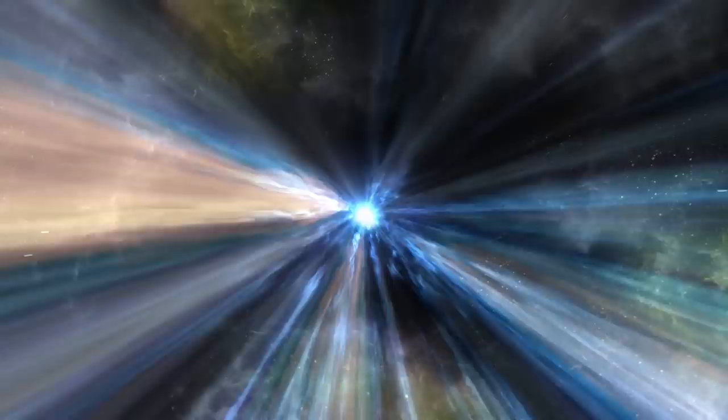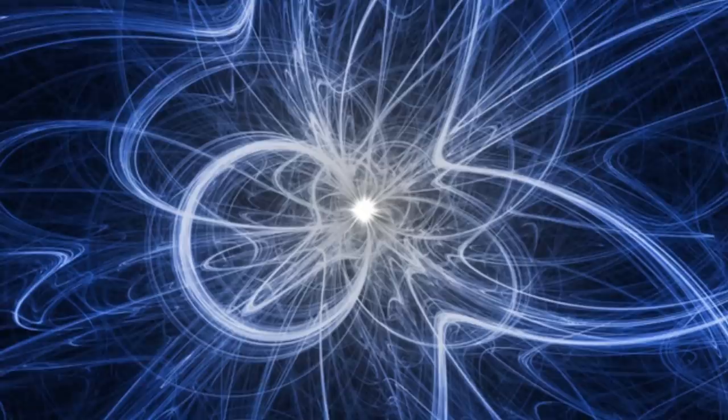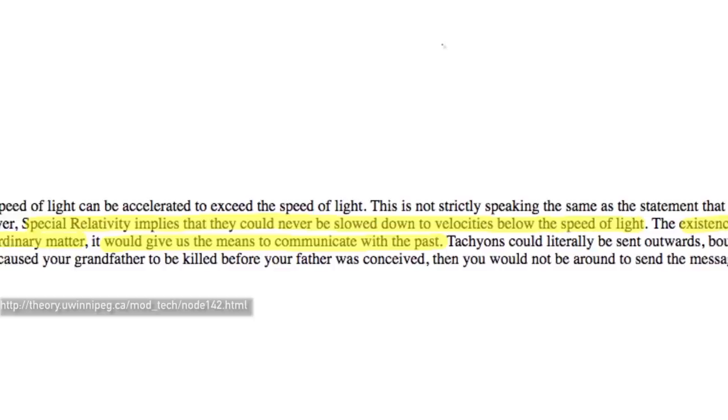The faster an object moves, the slower it experiences time. When you reach light speed, the passage of time should stop entirely. And if you go beyond it, as a tachyon is believed to do, then time should go backwards. One interpretation of how tachyons could work is that they are perpetually moving away from the future against the grain of time.